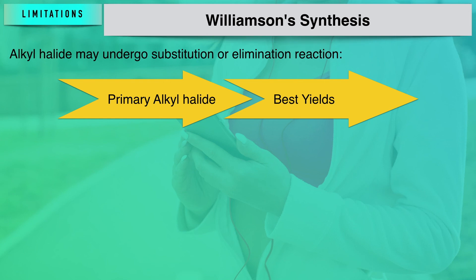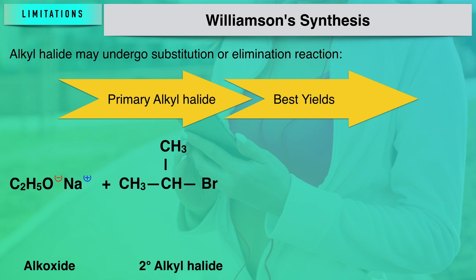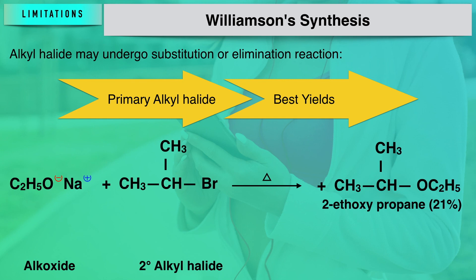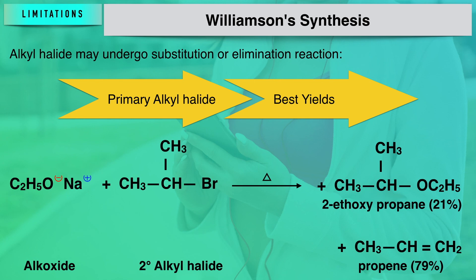For secondary alkyl halides — for example, 2-bromopropane interacting with sodium ethoxide on heating — the result is 79% propene (an alkene) and only 21% formation of 2-ethoxypropane. The reason secondary alkyl halides undergo preferably elimination rather than substitution is steric hindrance. Therefore, primary alkyl halides are the preferred choice in Williamson synthesis, while alkoxides can be primary, secondary, or tertiary for formation of symmetrical, unsymmetrical, or alkyl aryl ethers.